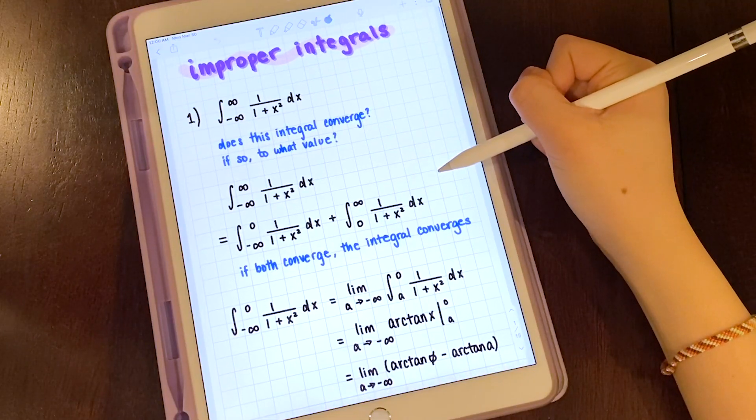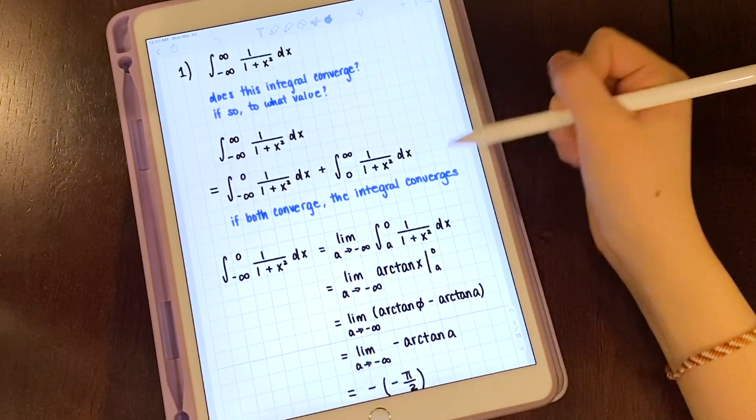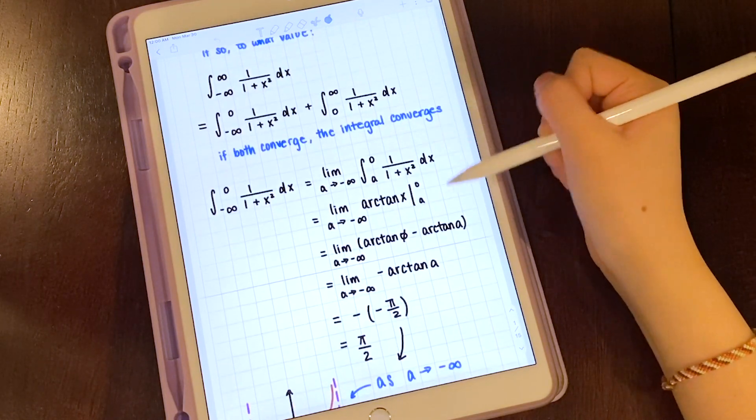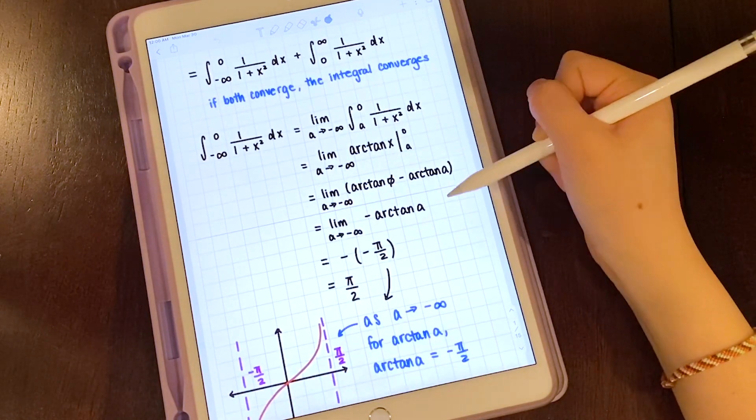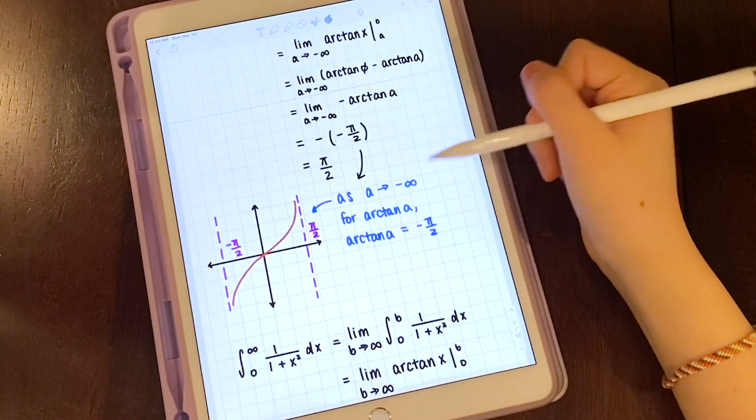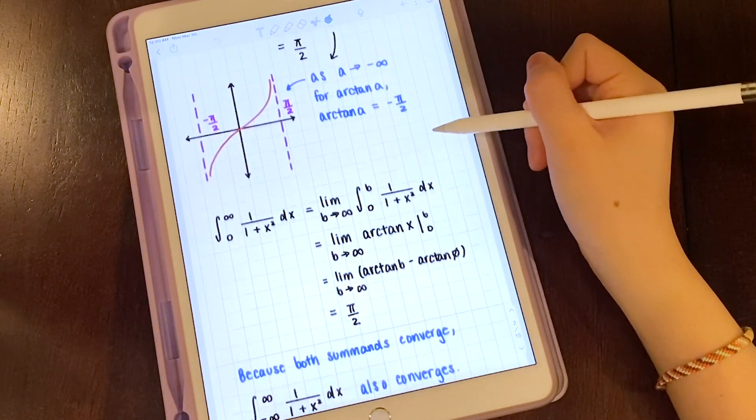So for math this is an example of notes that I might take. They're pretty similar to paper with how you could just write out the different equations but it's really nice to be able to use different colors and erase things easily.